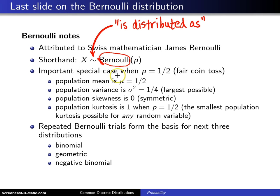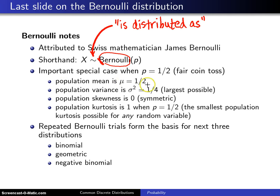There is an important special case of the Bernoulli distribution when p is equal to one-half, and that would correspond to a fair coin toss. In that case, the population mean is mu equals one-half, the midpoint between zero and one.